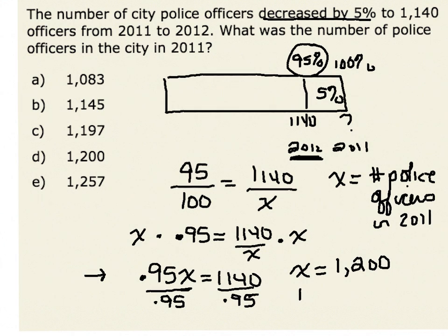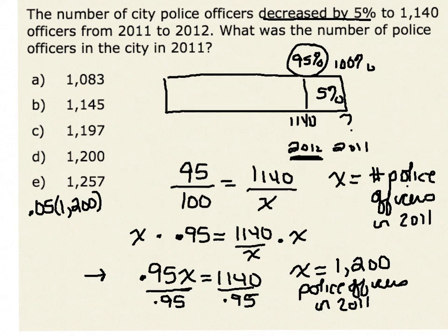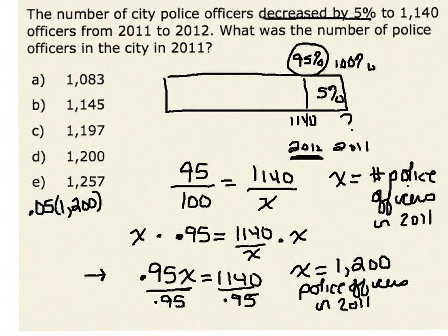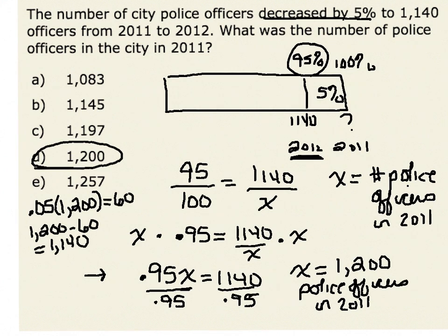We will see that x is equal to 1,200. That was the number of police officers in 2011. We can now check our work — we can verify a 5% decrease. Let's take 5% of our 2011 value, or 5% of 1,200. 5% of 1,200 gives us a decrease of 60 police officers. Therefore, if we took our 2011 value of 1,200 minus 60, that would give us our 2012 value, which is indeed 1,140 — verifying that 1,200 is the number of police officers in this city in 2011.